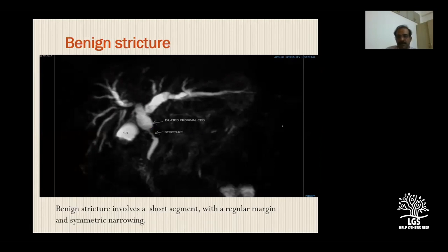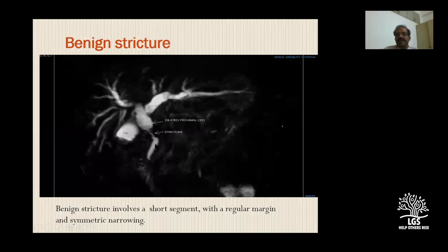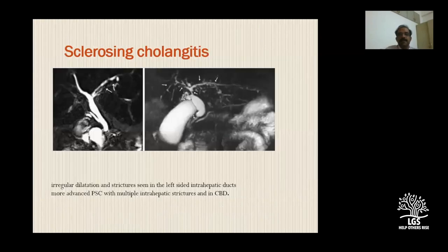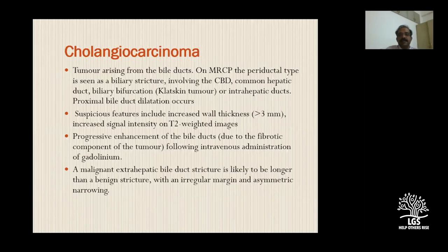MRCP also helps in differentiating between benign and malignant strictures. In a benign stricture, you see a dilated proximal CBD, normal distal CBD, a short segment stricture with smooth margins and symmetrical narrowing - indicating a benign etiology. In primary sclerosing cholangitis, there are branch duct abnormalities with alternating dilatation and strictures giving a beaded appearance throughout the biliary tree - very characteristic of sclerosing cholangitis.